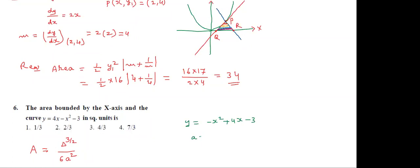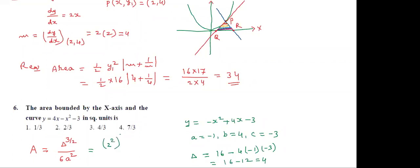Compute the discriminant: Δ = b² - 4ac = 16 - 4×(-1)×(-3) = 16 - 12 = 4. We can write 4 as 2². So A = (2²)^(3/2) / (6 × (-1)²) = 8/6 = 4/3. This is the required area.